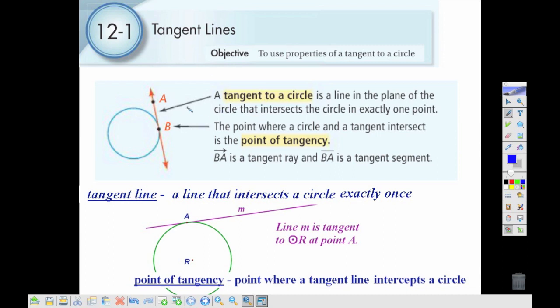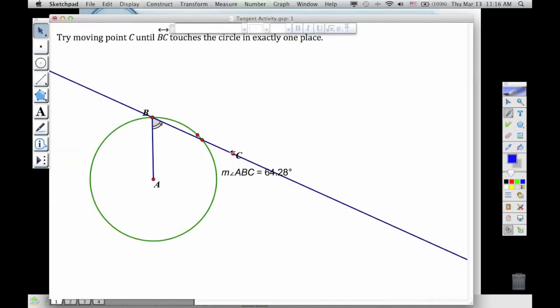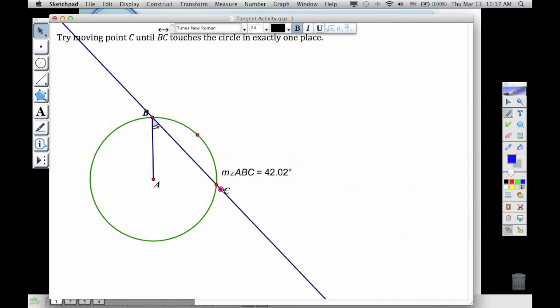The tangent line is a line that touches a circle exactly once, so it doesn't pass inside of the circle. So if I want to look at a tangent line, I might try to draw a line here. Notice that right now this line is crossing the circle twice. I want to move this so it's touching exactly once, which would be about there.